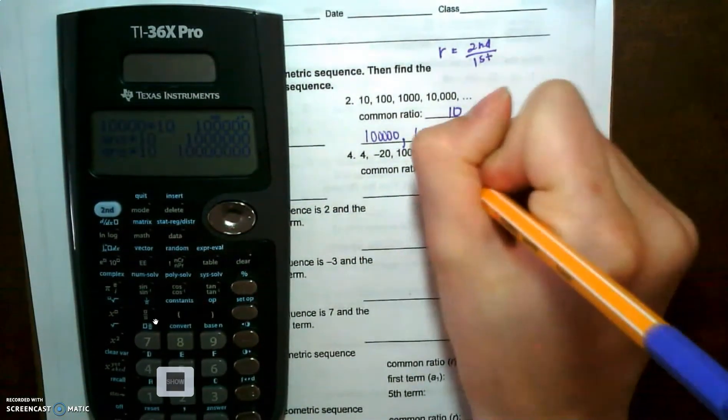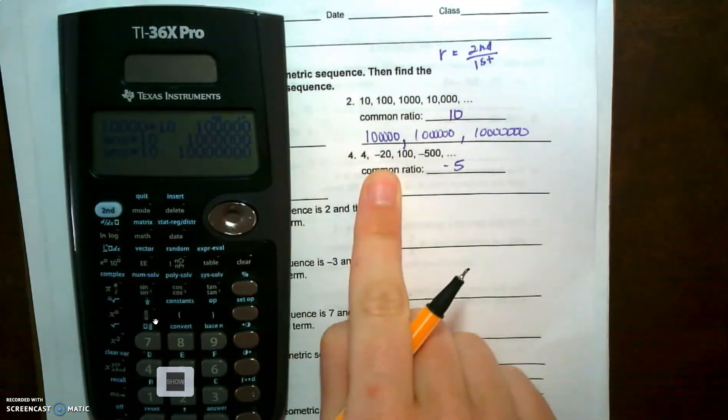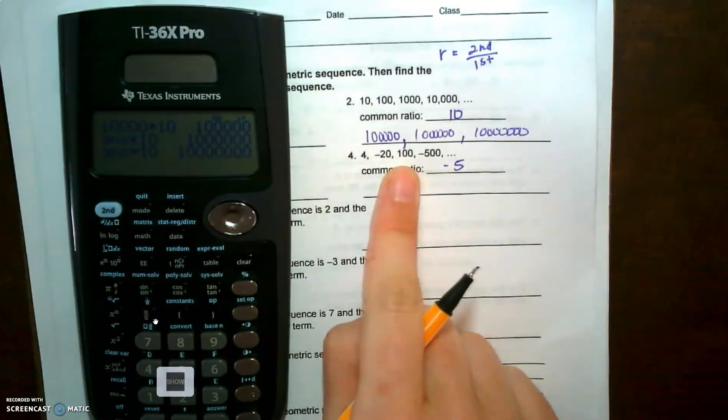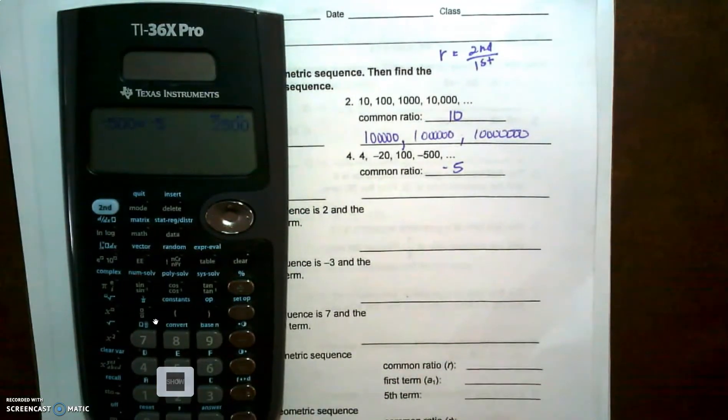And it's going to be negative five. Four times negative five is negative 20, times negative five is a hundred, times negative five is negative 500. So if we take negative 500 and multiply it by negative five, we get twenty five hundred.